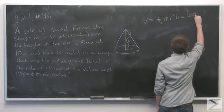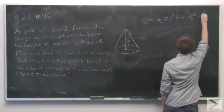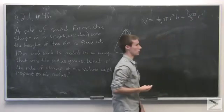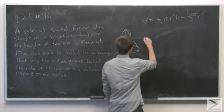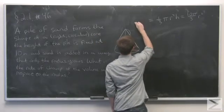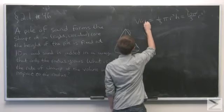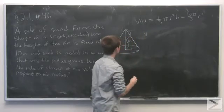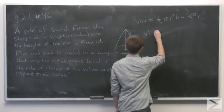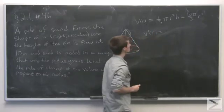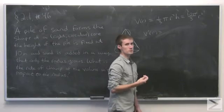So we have 10π over 3 r squared will give us the volume when the radius is equal to r. We actually write this as V(r). And we want the rate of change of the volume with respect to the radius. So we just take the derivative with respect to r.